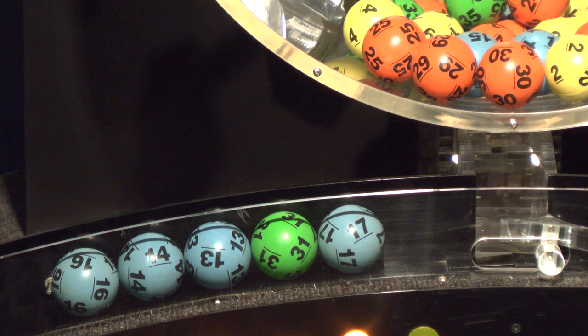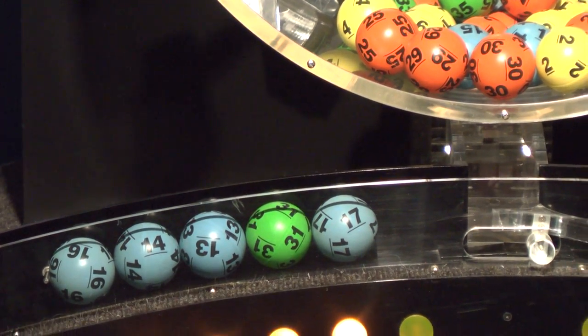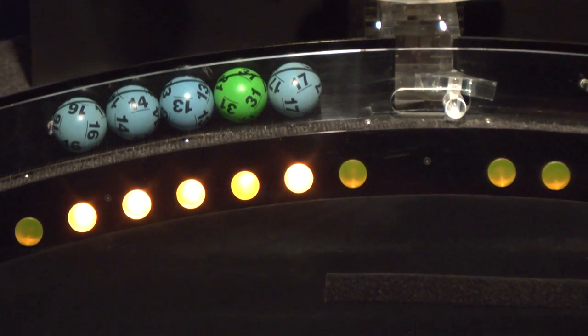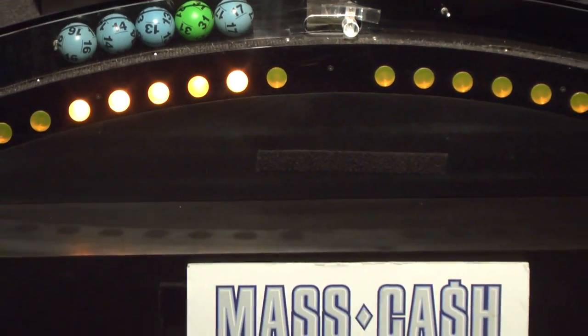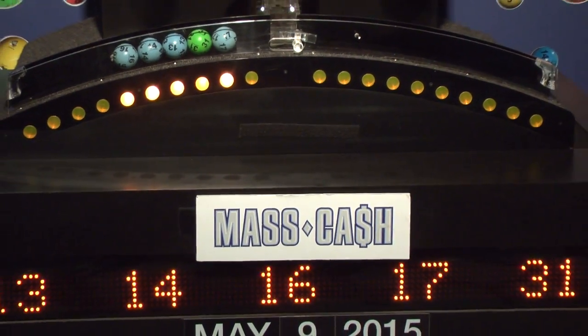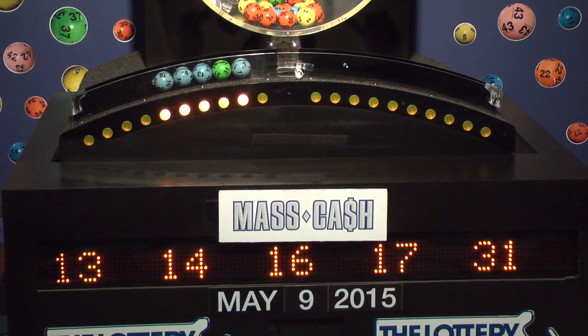Once again, the winning Mass Cash numbers for Saturday, May 9th are 13, 14, 16, 17, and 31. Remember to log on to MassLottery.com to watch all the Mass State Lottery's drawings.